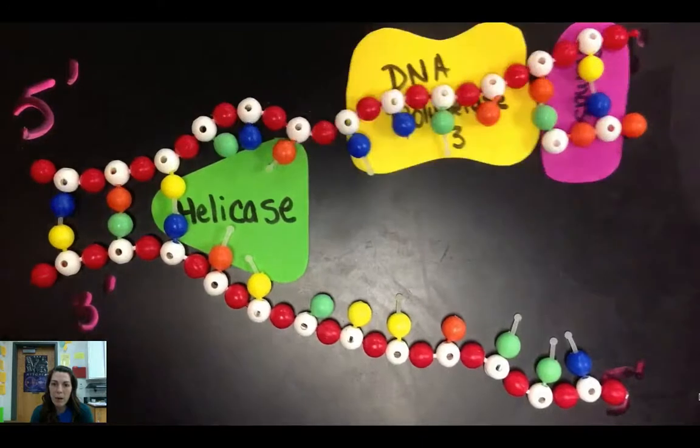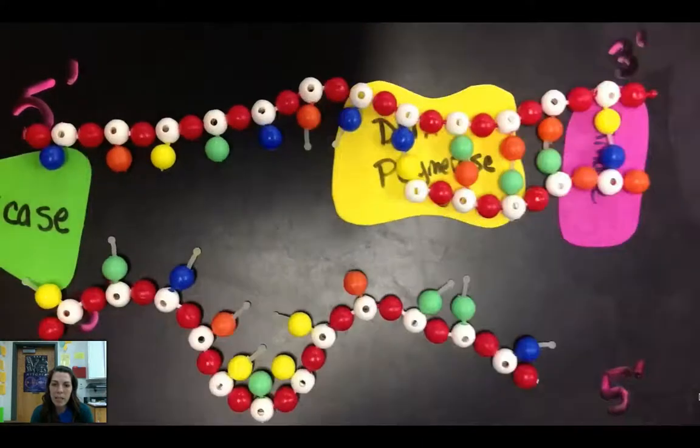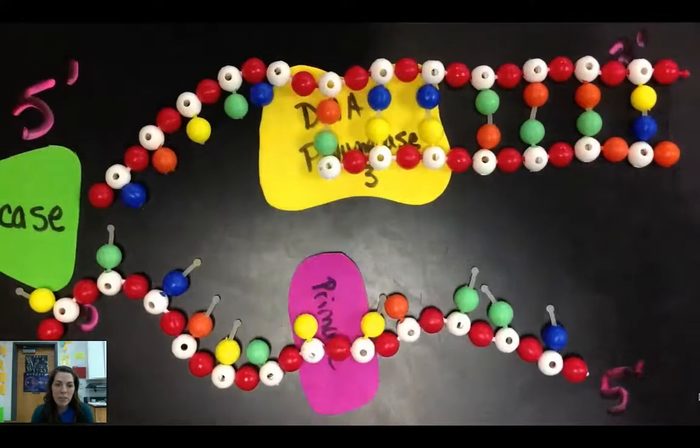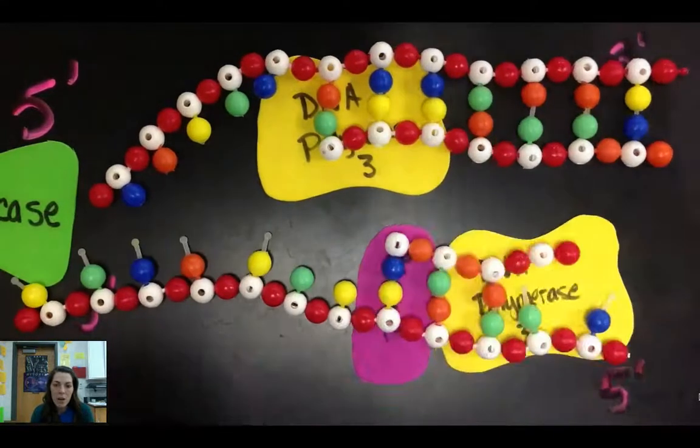Primase is going to come in and add an RNA primer. DNA polymerase will come in and extend that primer in the 5' to 3' direction on the leading strand that's continuous.